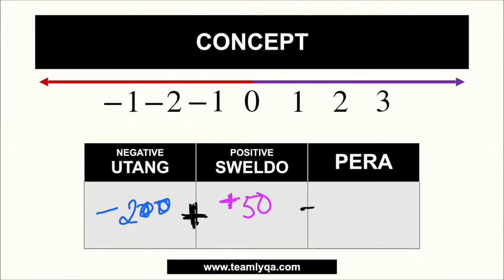Ngayon, kung ang dinagdag mo naman ay utang din, so for example, instead na sumweldo ka, nagpalista ka uli, so nang utang ka uli nang, sabihin natin, nang utang ka ng 100. So yung utang mong 200 dinagdagay mo ng utang uli ng 100, ang utang mo kalalabasan, magiging negative 300, or may utang ka pa ngayon na 300 pesos. So yun yung konsepto ng positive at saka negative. So always think of it this way, again ha, pag negative, utang, kapag positive, sweldo. Tapos when you combine them, dapat isosolve mo na yung utang bago ka mag-move on dun sa positive na pera.